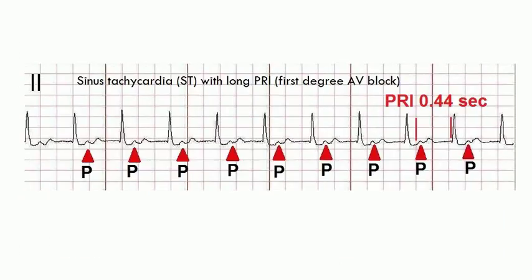The first thing that comes to mind is sinus tachycardia with a long PRI, also known as first-degree AV block. The atrial and ventricular rate is about 100 beats per minute with a prolonged PRI interval of about 0.44 seconds. It is possible to see a P-wave between a QRS and a T-wave, as you see in this case.